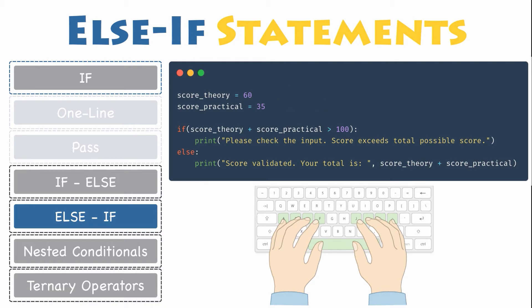I bet you guessed it right. This code will output score validated your total is 95. Although this is wrong, since you know that the maximum limit for individual scores for theory or practical should not exceed 50.